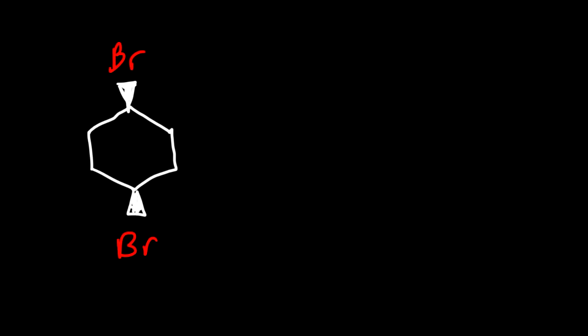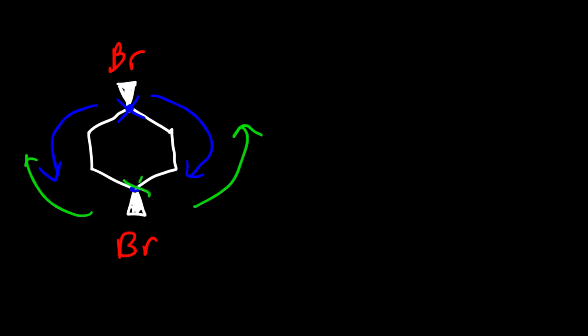Now how about this example? How many chiral centers can you identify in this molecule? Notice that the left side is the same as the right side, so this is not a chiral center. The same is true for this carbon — the right side is the same as the left side. So there are no chiral centers in this molecule.